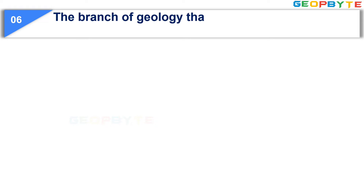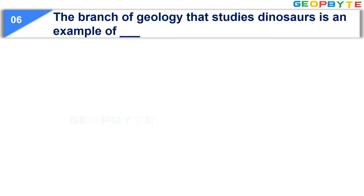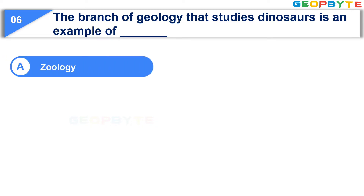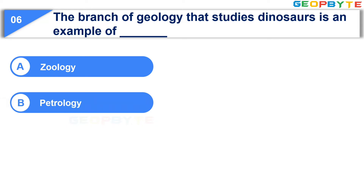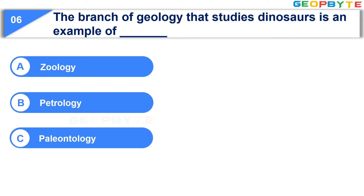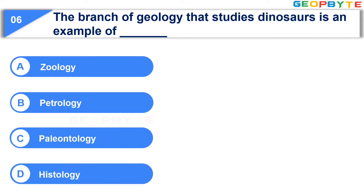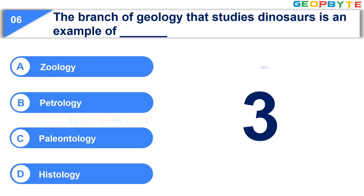The branch of geology that studies dinosaurs is an example of: Option A: Zoology. Option B: Petrology. Option C: Paleontology. Option D: Histology. Your time starts now. Your time is up and the correct answer is Option C: Paleontology.